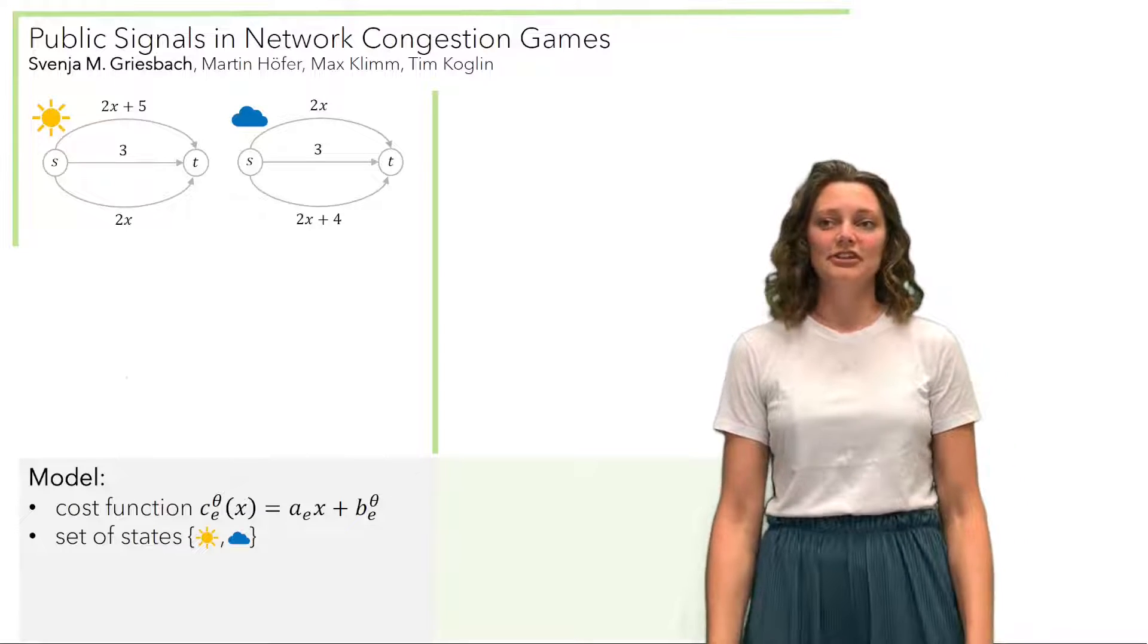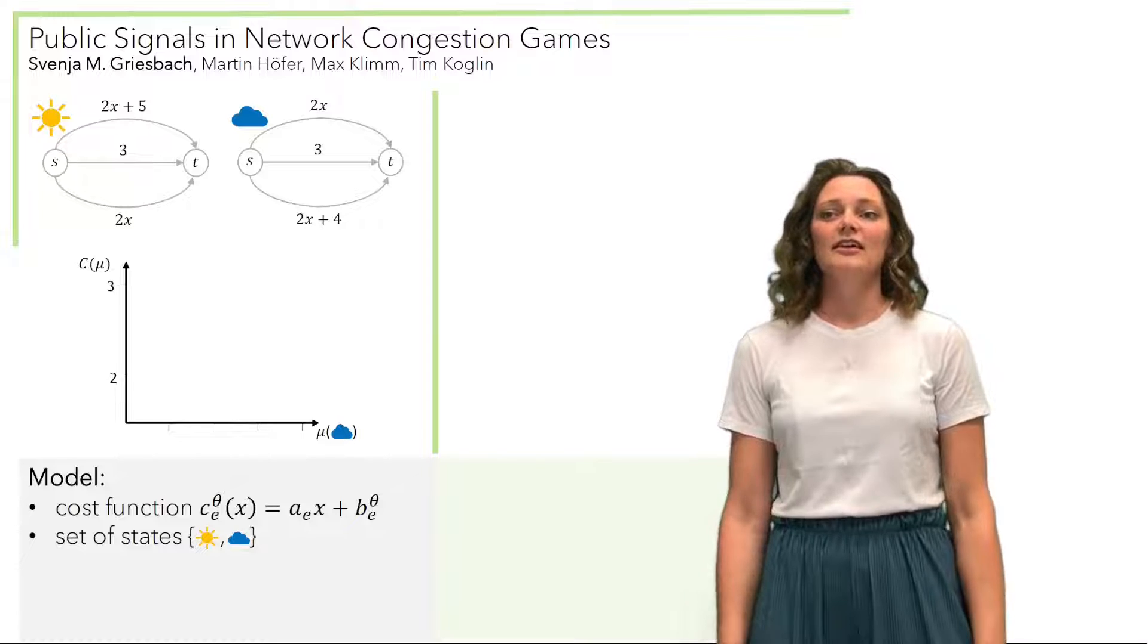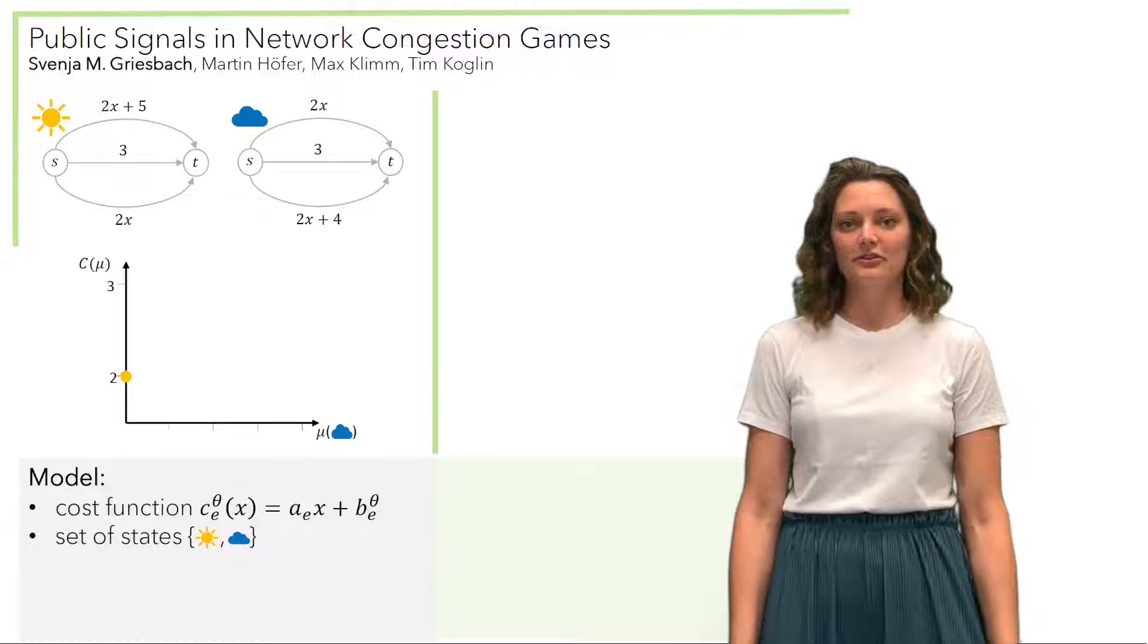So now we can calculate for each state the total cost in equilibrium. So if it's sunny, we will actually have a cost of 2, and if it's raining, we also have a cost of 2.